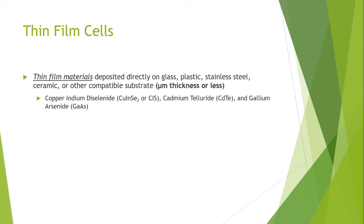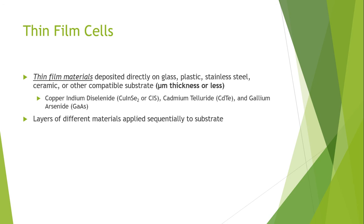The thin film material is basically deposited on glass, plastic, stainless steel, ceramic, or other compatible substrates, which are flexible in nature. Copper indium diselenide, cadmium telluride, and gallium arsenide are a few types of thin film cell structures. Layers of different materials are applied sequentially to the substrate material.